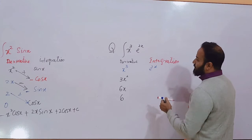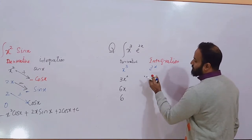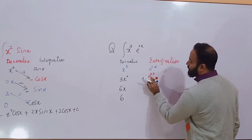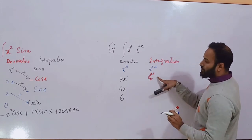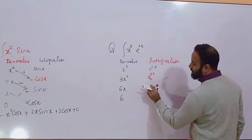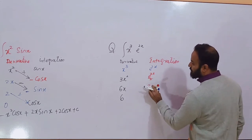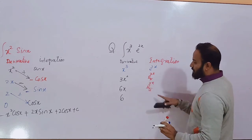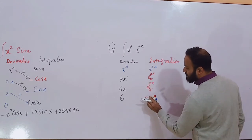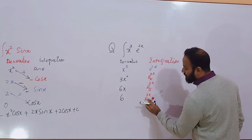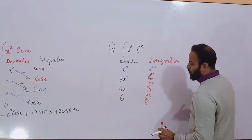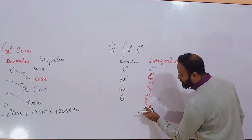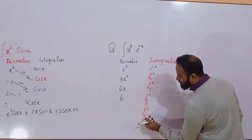What is the integration of e^(2x)? That is e^(2x) divided by 2. And what is the integration of e^(2x)/2? That is e^(2x) by 4. And what is the integration of that? That is e^(2x) by 8. And what is the integration of this term? That is e^(2x) divided by 16.